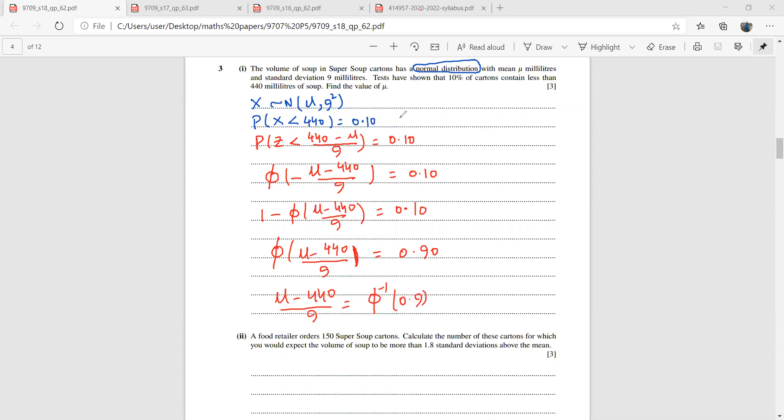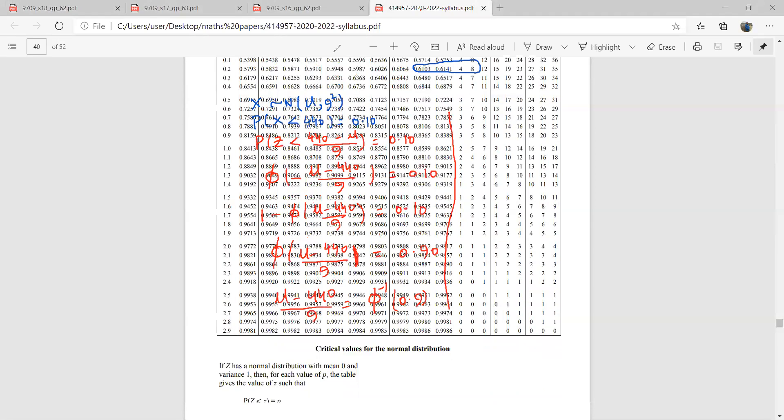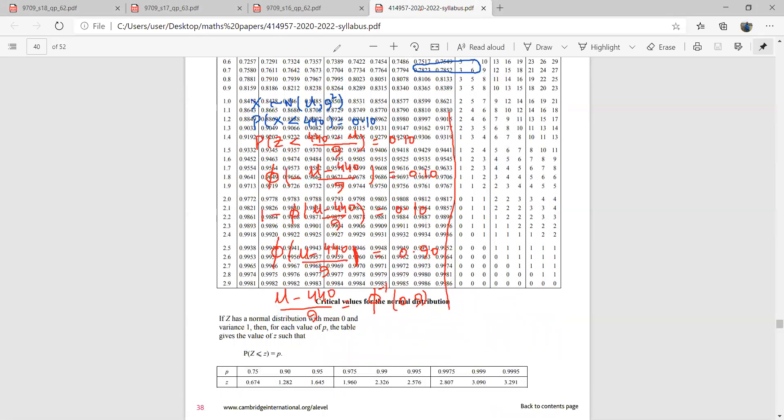Before you start this question, if you draw a vertical line here in the middle, that can double your space. Let's see what is phi inverse of 0.9. If you go at the bottom of this table, there are these critical values. You can quickly find the required z value. We have the probability 0.9, so phi inverse would be 1.282.